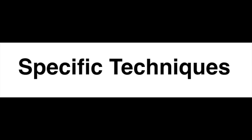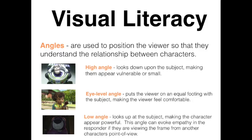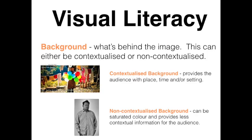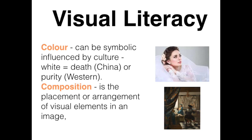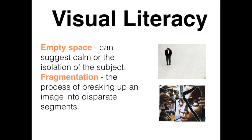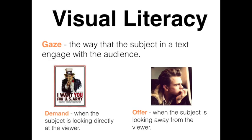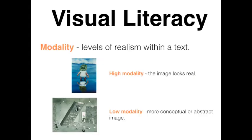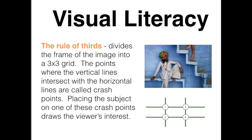It's vital that you are able to recognise the techniques that are specific to each text type. I'm providing examples of different techniques in this video; however, I want to stress that this isn't an exhaustive list. For any texts that have a visual image, you should be able to recognise the use of angles, materials, appropriation, audience, background, colour, composition, empty space, fragmentation, gaze, framing, modality, perspective, shot, and the rule of thirds.